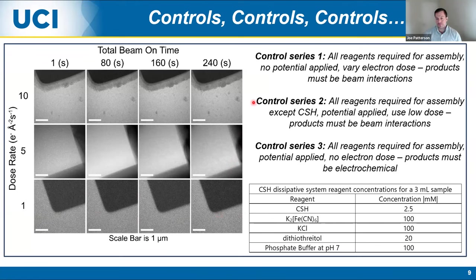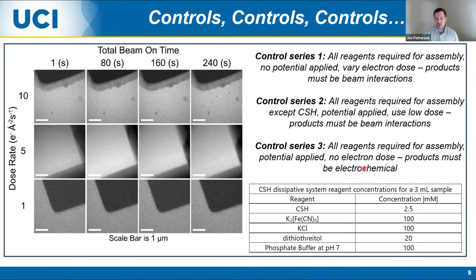Control series 2: add all reagents except the CSH non-activated building block, apply a potential, use our established low-dose imaging conditions. Any products must be beam products since we lack the actual building block. When we do this, we don't see any products forming - a good control. Control series 3: add all reagents, apply a potential to form the hydrogel, but don't image the sample - either outside the microscope or with the beam blanked. Any products here must be the electrochemical product we're interested in, without beam interference.